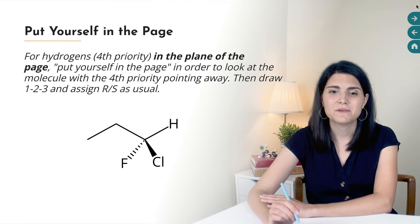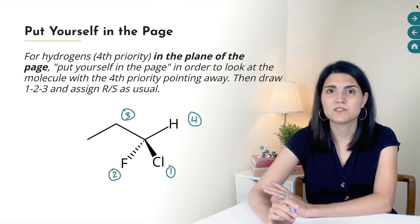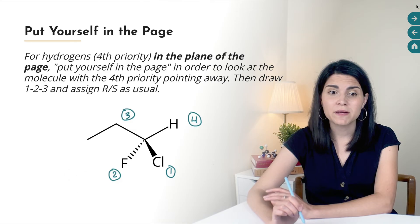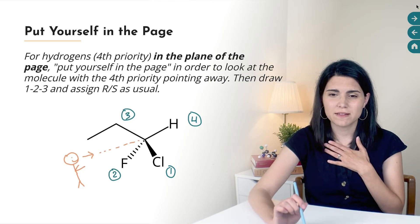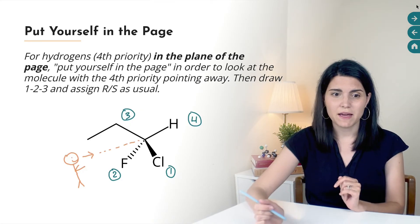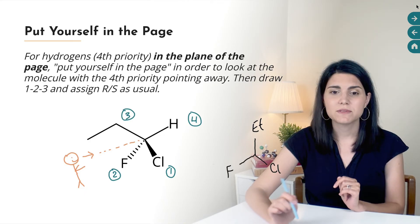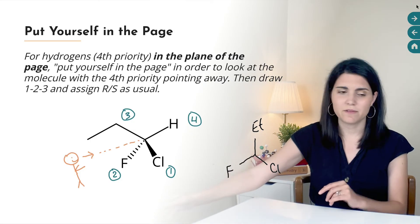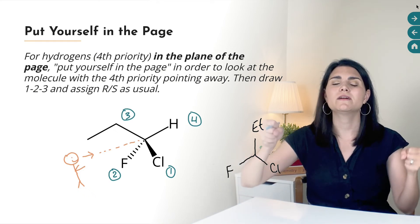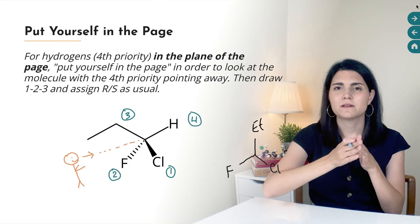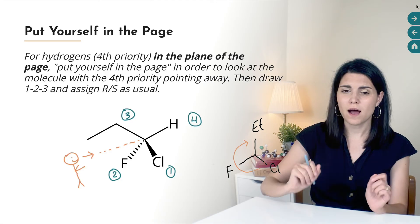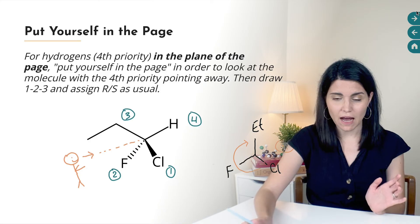This next method is great when the hydrogen or fourth priority group is in the plane of the page — not on a dash or wedge, just on a flat bond. Imagine standing within the page looking straight down the bond from the chirality center to the hydrogen, which is pointing away from you. From that viewpoint, you'd see chlorine down and to your right, fluorine down and to your left, and the ethyl group straight up above your head. Tracing the circle from one through two to three is clockwise, so the configuration is R.